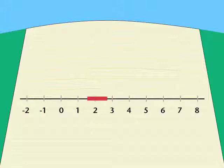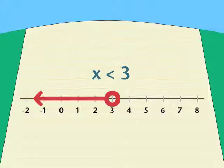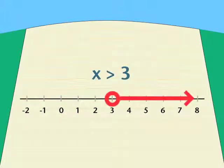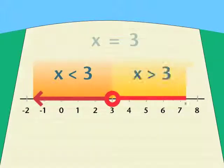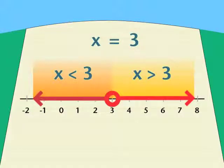With one variable, we can draw an accurate picture on the number line. X is less than 3 looks like this. X is more than 3 looks like this. Put the two together on the same number line and something very useful and interesting happens. When we graph the statement x equals 3 — an equation — we divide the number line into two pieces: less than 3 and greater than 3. One equality creates two inequalities, a concept that will be very helpful when we have to work with two variables.